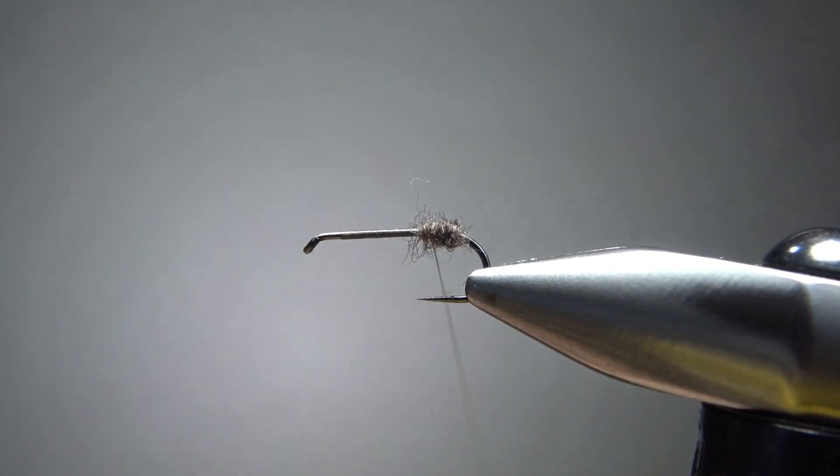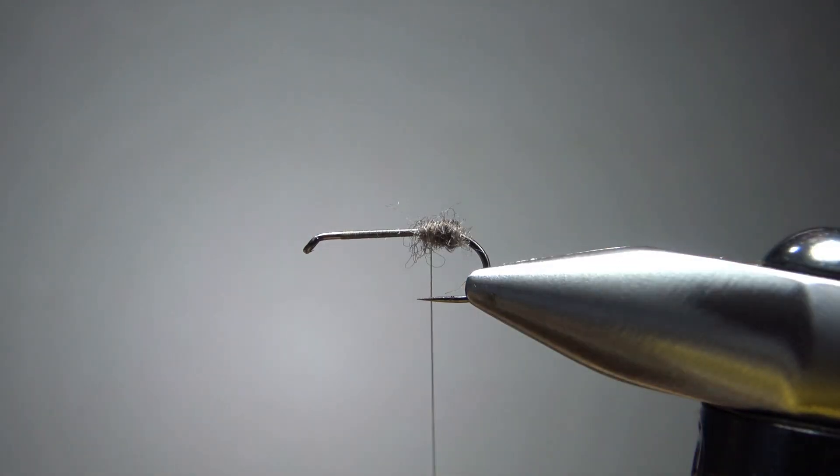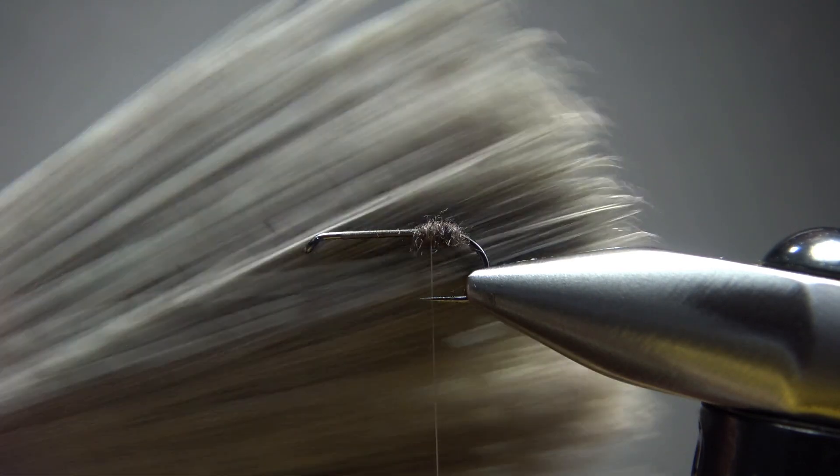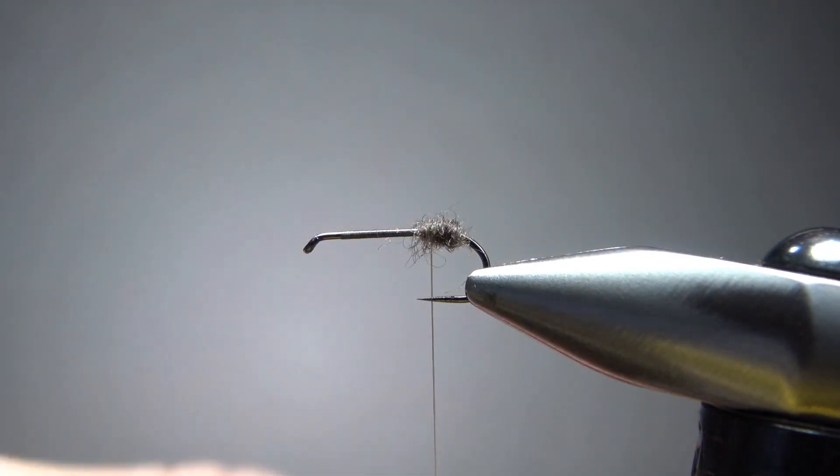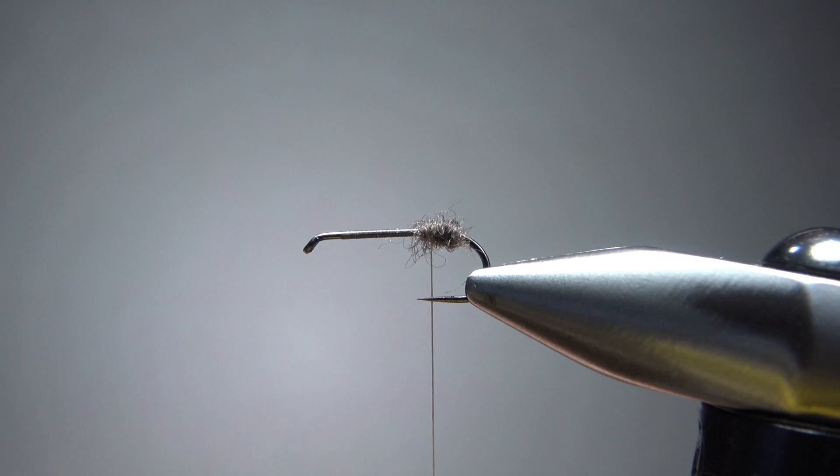Okay. That's a little bit bigger of a bump than I want. But we're going to make it work. So take two. These things are called micro-fibetts. Which basically looks like a paintbrush. It's kind of a synthetic material. Mayfly dun tailing material. But just grab two of these.